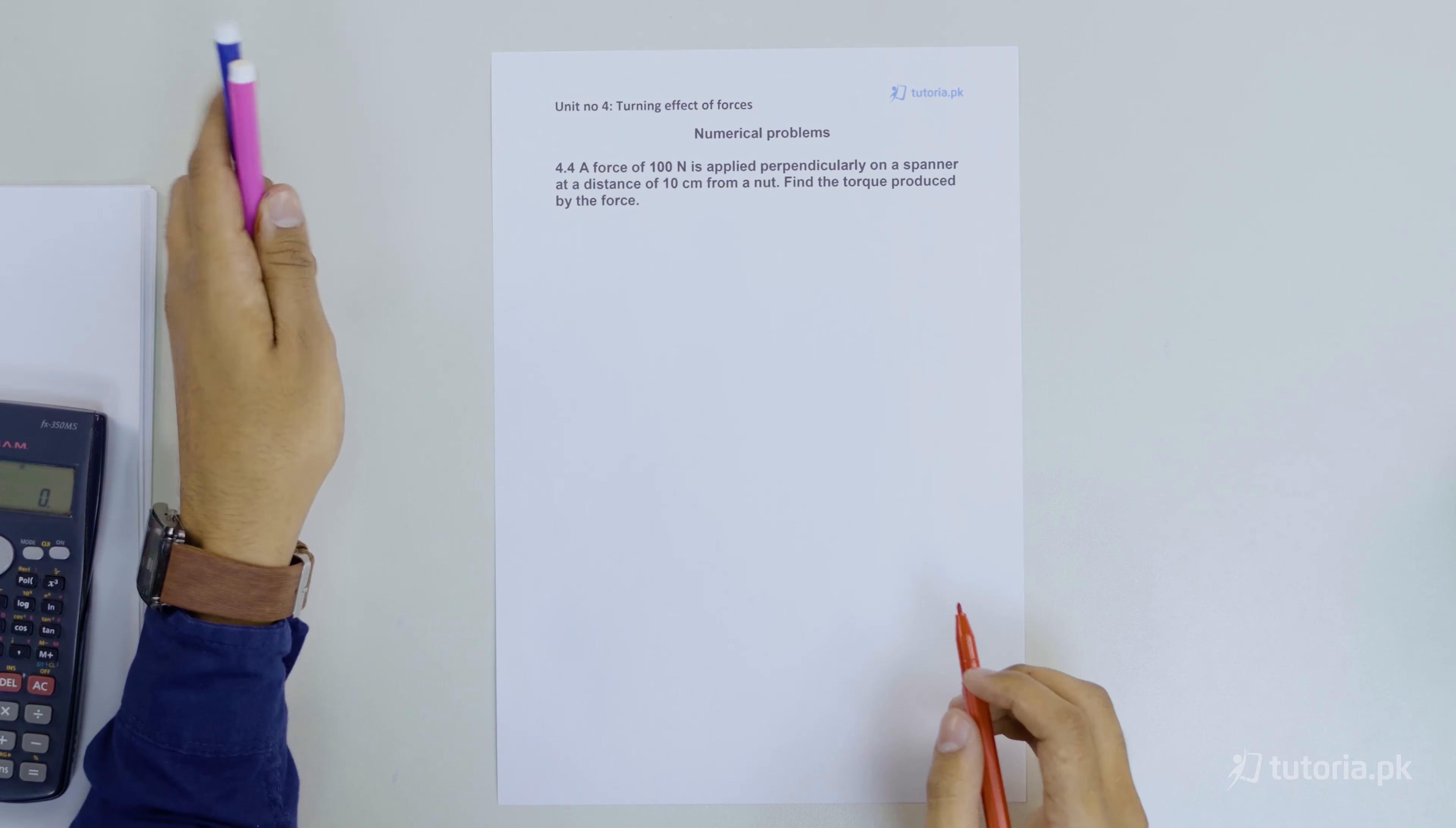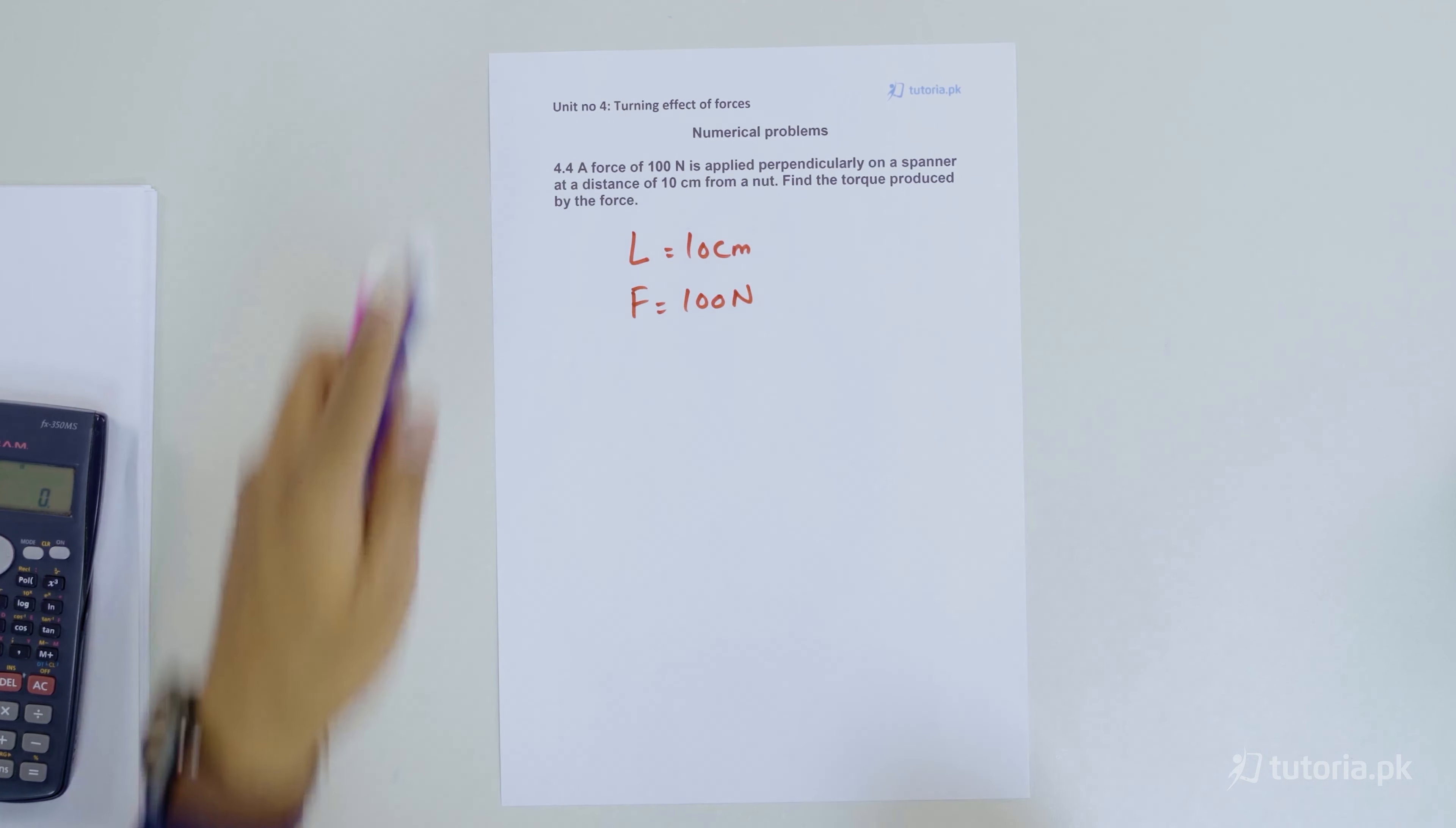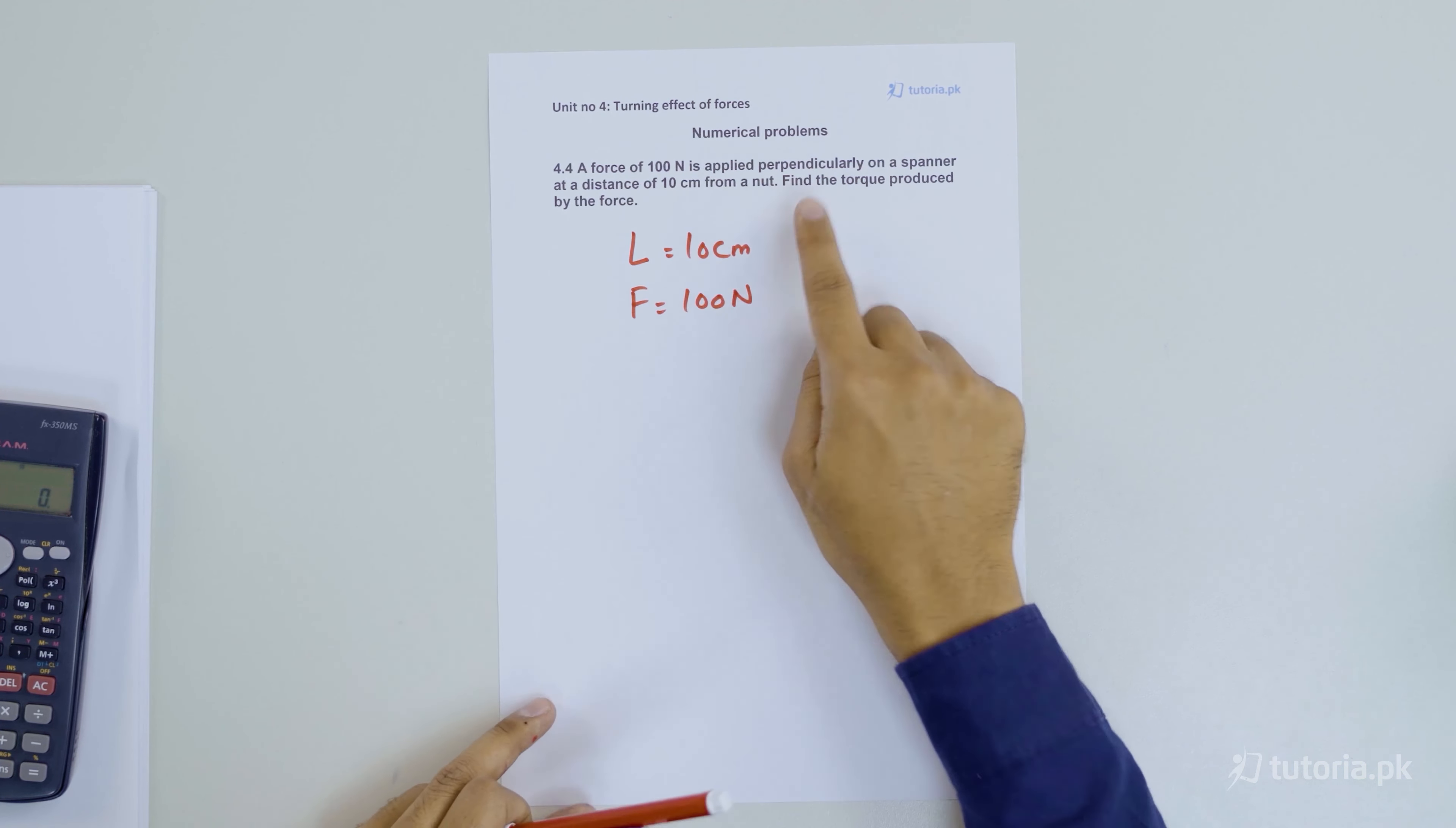It is a very simple question. You have the length of the spanner, i.e. moment arm, which is 10 cm, and the force is also given to you as 100 Newton. When you have these two things, you need to find torque.